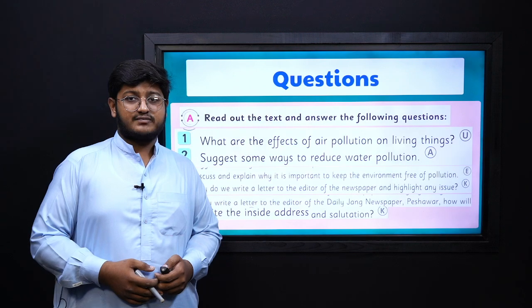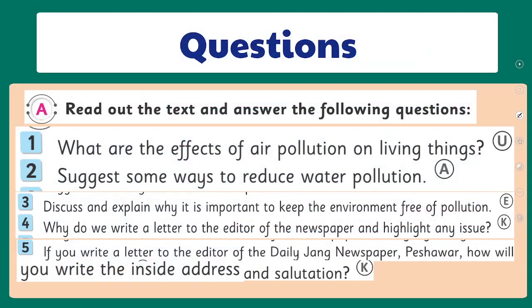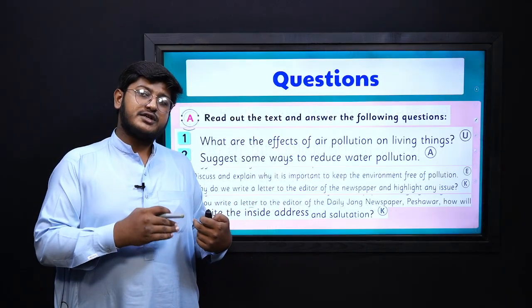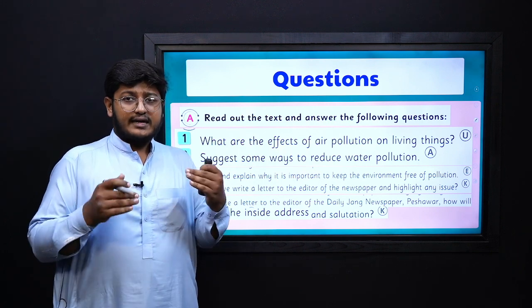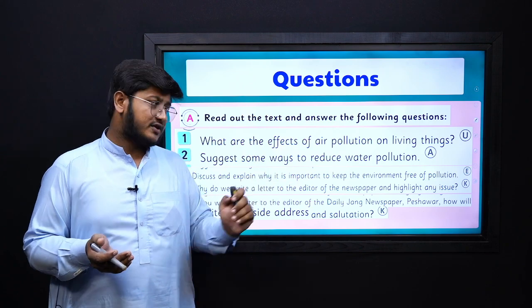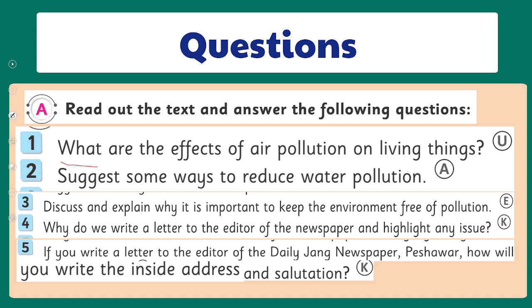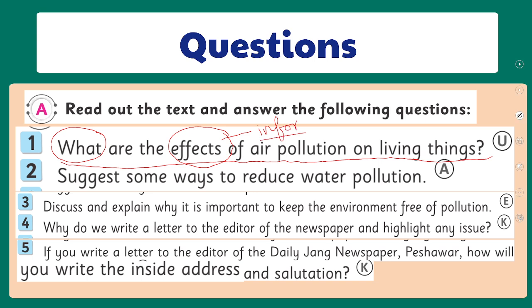Let's look at example questions from our text. First question: 'What are the effects of air pollution on living things?' This starts with 'what' and asks for simple factual information. You can answer this question just by reading the text, which makes it a simple question — not a higher order question.